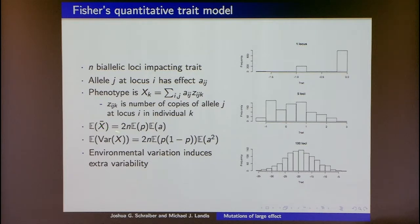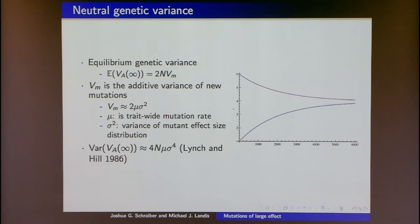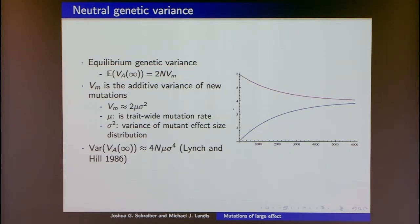I'm going to ignore environmental variability for the rest of this talk. When a trait evolves, genetic variance changes through time, and you can show that under a wide range of reasonable models, at equilibrium the genetic variation is given by twice the population size times the mutational input.